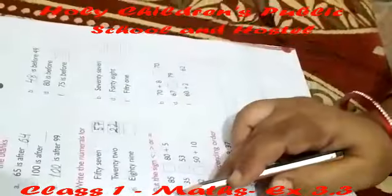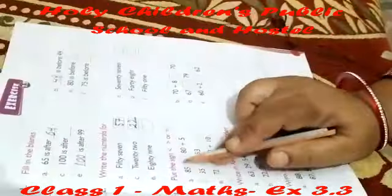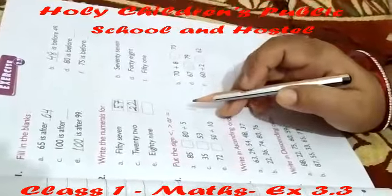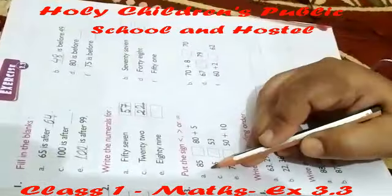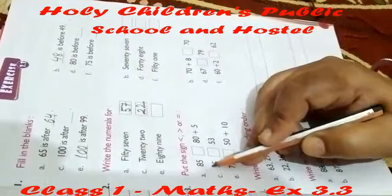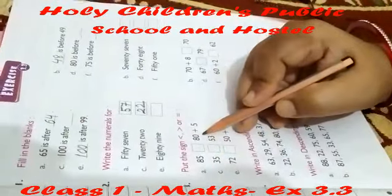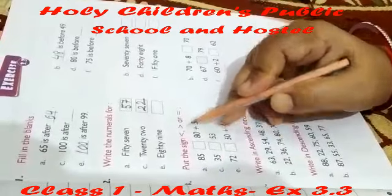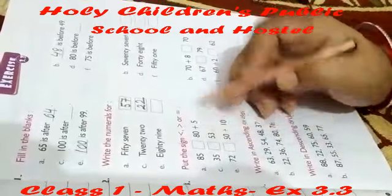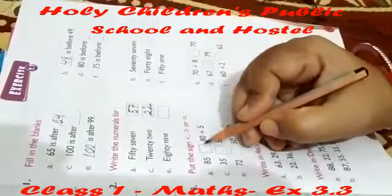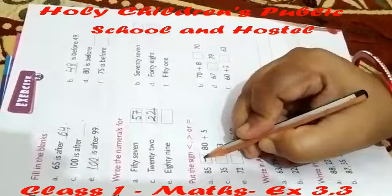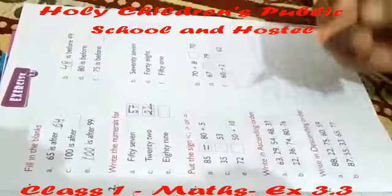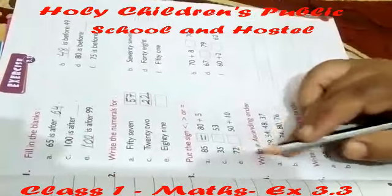Question number 3 is put the sign — greater than, less than, or equal to. Here 85 is given. On this side, 80 plus 5 is equal to 85. So 85 is equal to 85. We put the equal to mark in this box.